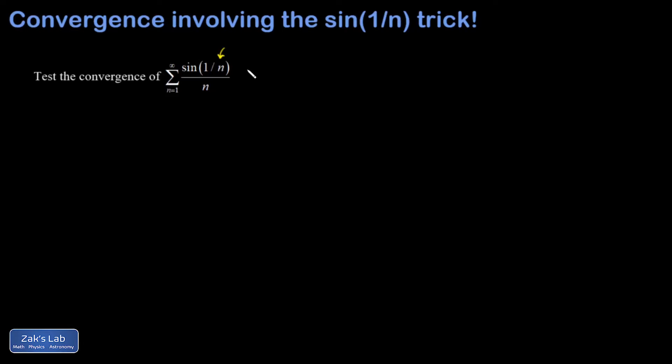And my first thought for how this might happen is that sine of 1 over n might actually be less than 1 over n, which would make this whole thing less than 1 over n squared. That means the terms of this series are less than those of a convergent p series.